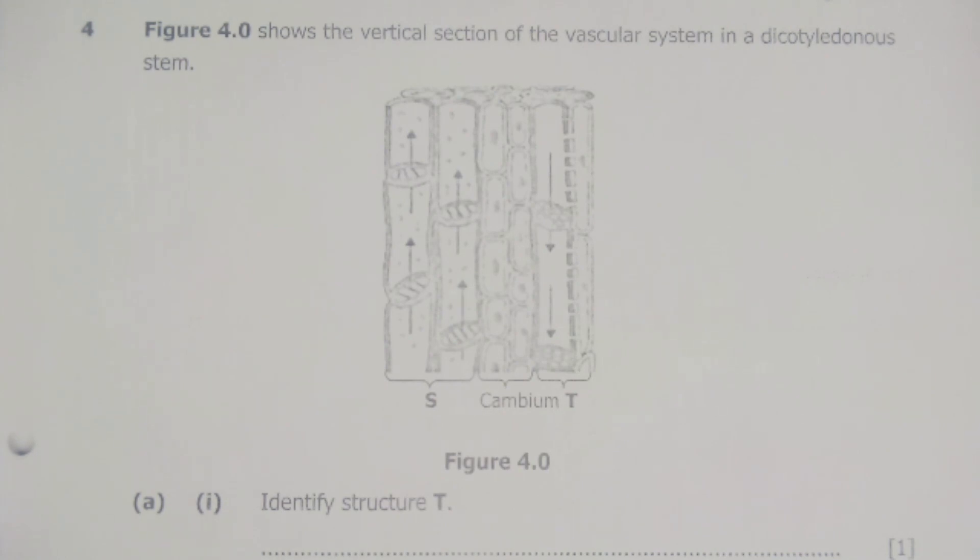The first question is A which is saying identify structure T. So this is structure T. Structure T is quite interesting in that here whatever it's transporting is going down. Then apart from that it has got perforations here and it has got neighboring cells here. So these cells might actually be companion cells.